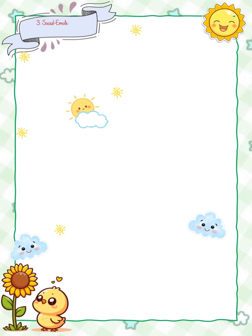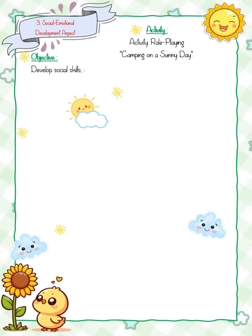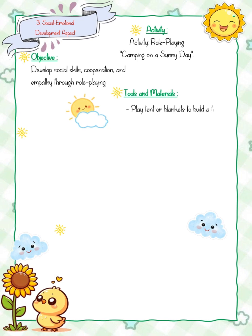Activity three, social-emotional development aspect: role-playing camping on a sunny day. Objective: develop social skills, cooperation, and empathy through role-playing. Tools and materials: play tent or blankets to build a tent, hats, toy sunglasses, and dolls.